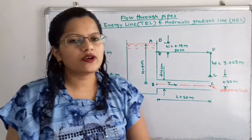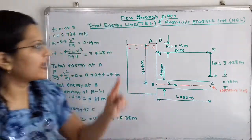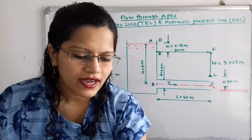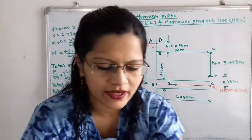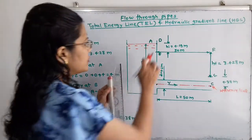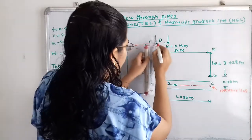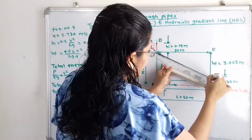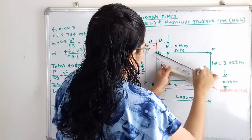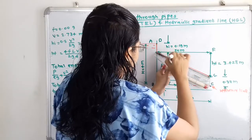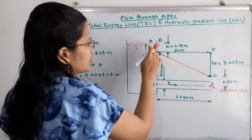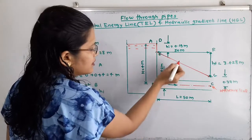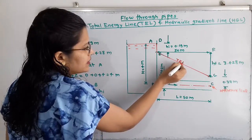Now we join these points to create the total energy line. Using a red marker, we connect D to E, then E to G. The line D-E-G is the total energy line, labeled TEL.